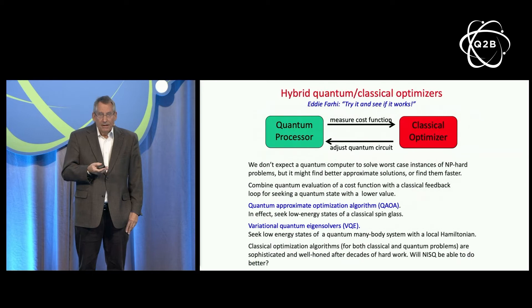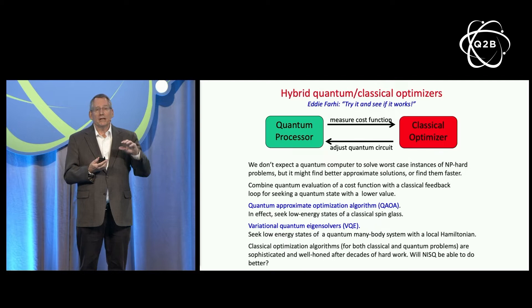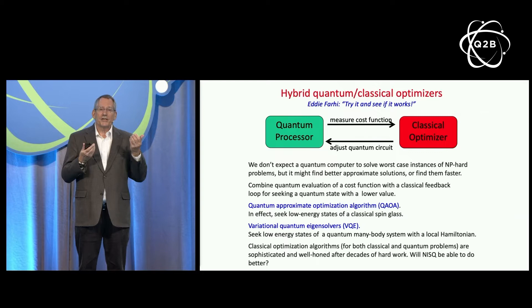There is an emerging paradigm for using near-term quantum devices: a hybrid quantum-classical scheme. It makes sense to leverage the power of classical computers and use the quantum computer as a kind of coprocessor. This works by executing a relatively low-depth quantum circuit, measuring all the qubits, and sending the results to a classical computer, which returns instructions about how to slightly modify the quantum circuit. That cycle is then iterated with the goal of minimizing some cost function to approximately solve an optimization problem.